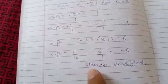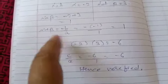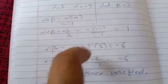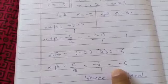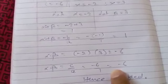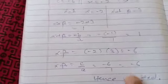So in this way, hence verified the relation between zeros and its coefficients. With the help of this example, you will be able to solve the second exercise of polynomial chapter very easily. Thank you. Have a nice day.